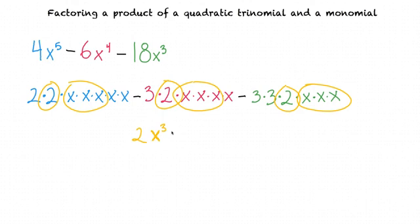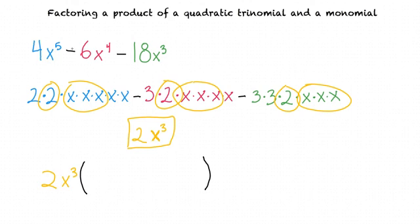So the greatest common factor of each of these terms is 2x cubed. Besides this 2 and the x cubed, there are no other common factors that all three of our terms have, so this is the greatest common factor. Now that we've found the greatest common factor, we can factor it out of each of our original terms. 4x to the fifth power divided by 2x cubed is 2x squared.